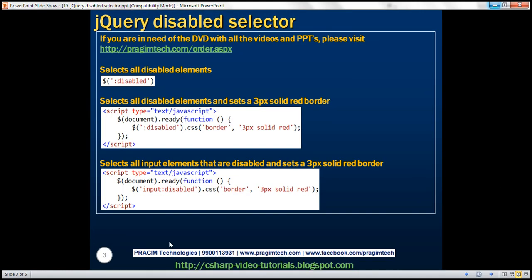First, let's look at the disabled selector — colon disabled. This selector is going to select all elements that are disabled. Let's look at a few examples.